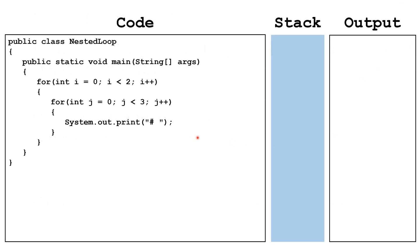So let's take a look at some code. We have a class — we call it NestedLoop — and then we have a main method. Inside the main method, we have our outer loop. The outer loop starts off i at zero and will go as long as i is less than two. So this one will go through two times: while i is zero, while i is one, and when i hits two, it terminates.